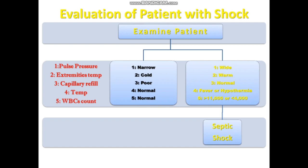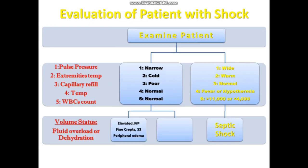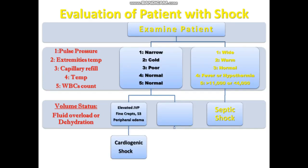It's simple: cardiogenic shock causes fluid overload, and hypovolemic shock has less fluid in the body. We need to see the volume status. For fluid overload, we listen to the lungs — look for crackles, an S3 gallop, elevated JVD, and peripheral edema. If these signs are present, it's definitely cardiogenic shock.